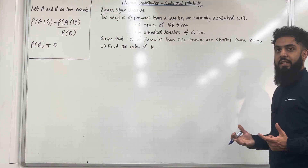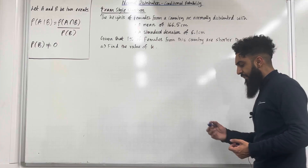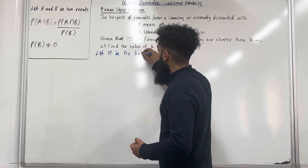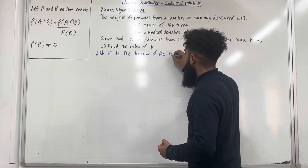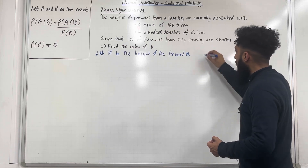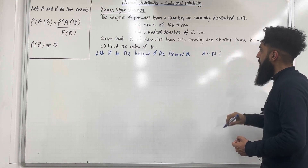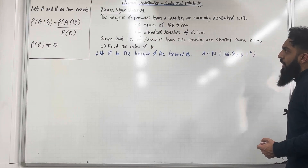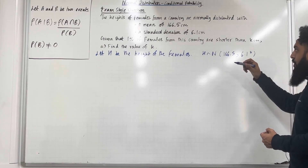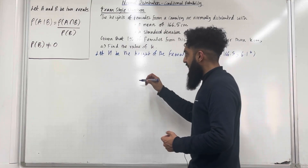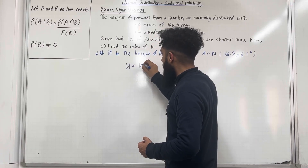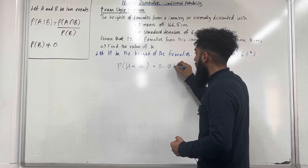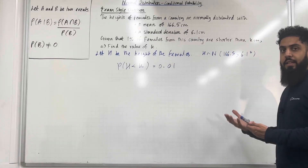We're going to start by defining a random variable for the height of the females. Let H be the height of the females. We know that H takes on a normal distribution with a mean of 166.5 cm and variance 6.1 cm squared. In the question, it says that 1% of females from this country are shorter than K cm. Shorter than K cm means that H is less than K, and the probability of this happening is 1%, which is 0.01. Our target is to find the value of K.